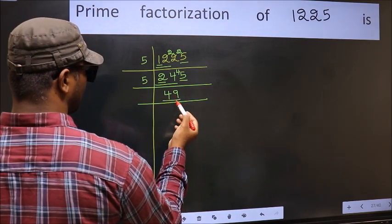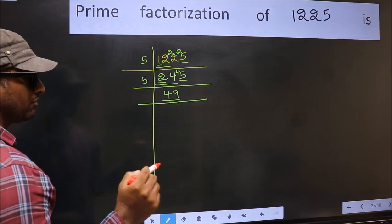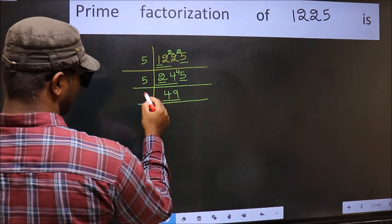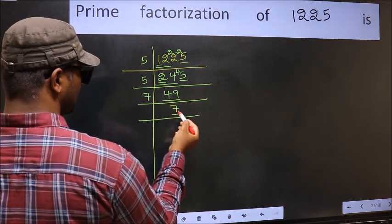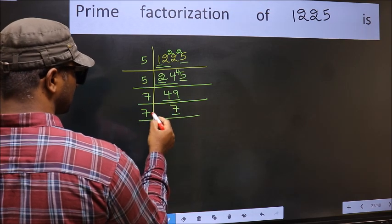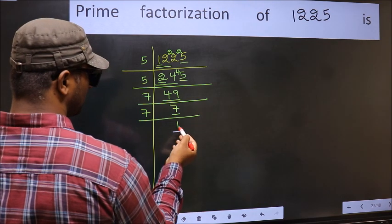Now here we have 49. Always remember 7 into 7 is 49. That is 7 times 7 is 49. Now we have 7. 7 is a prime number, so 7 divided by 1 is 7. So we got 1 here.